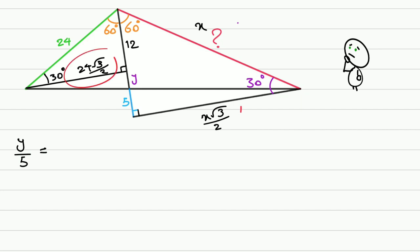If we call this small segment y, then y over 5 equals this over this: 24√3/2 over x√3/2. We simplify and cross multiply. Y is 120 over x.